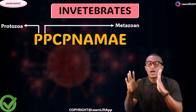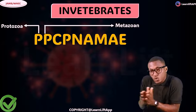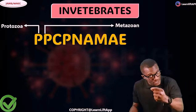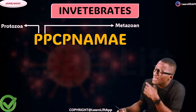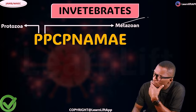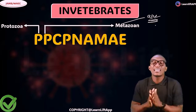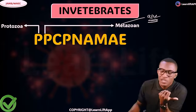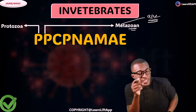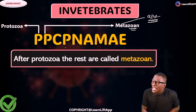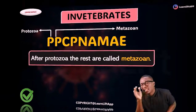So under invertebrates, we said the first phylum is Protozoa — 'pro' means first and 'zoa' means animal. The rest after Protozoa are called Metazoa — 'meta' means after. So these are the after-animals, coming after the Protozoa.